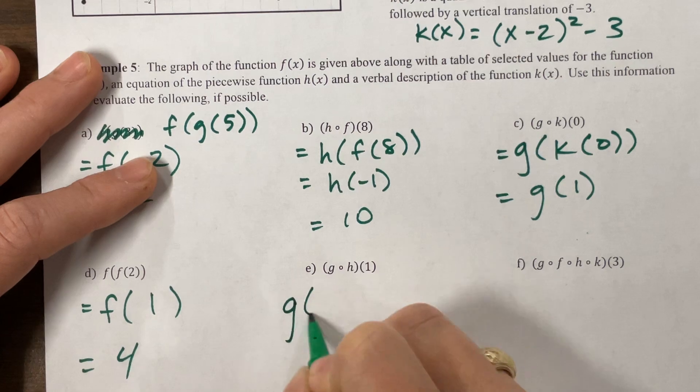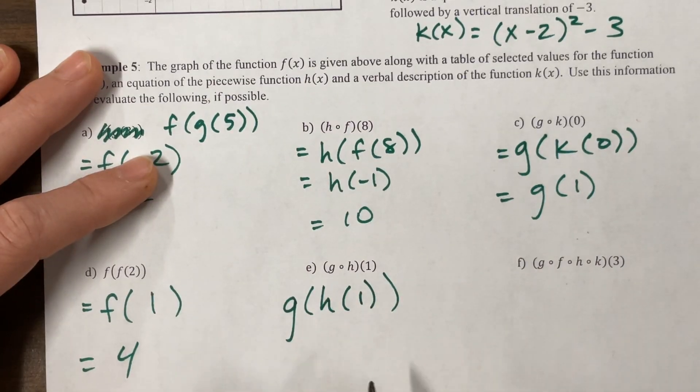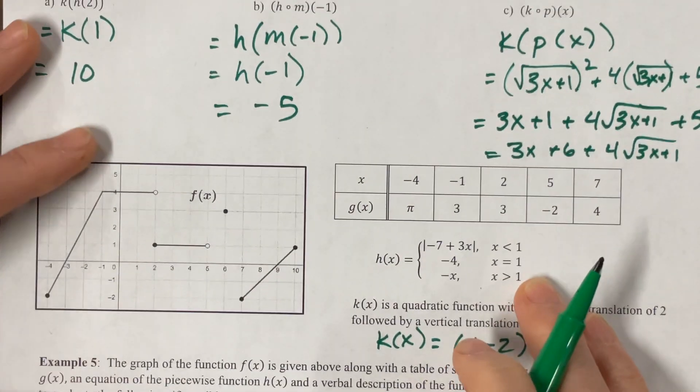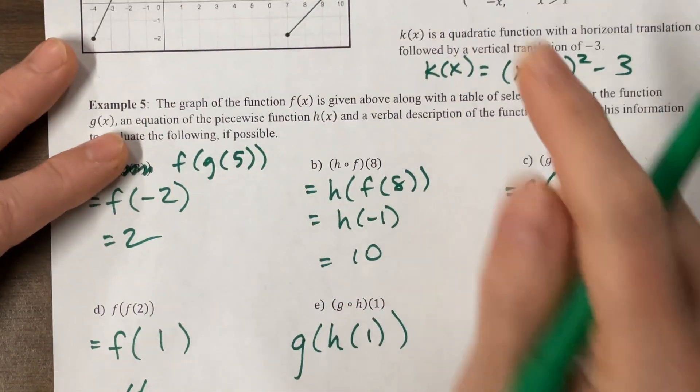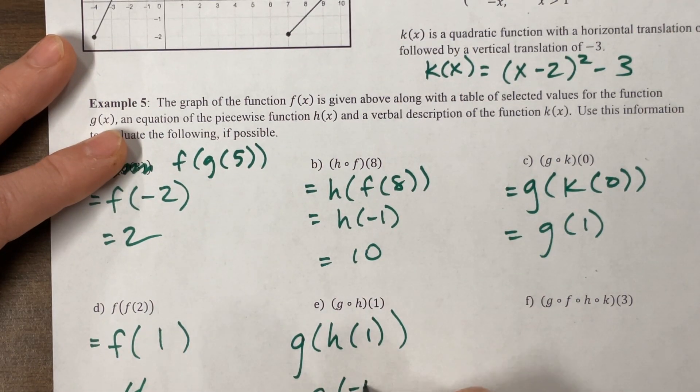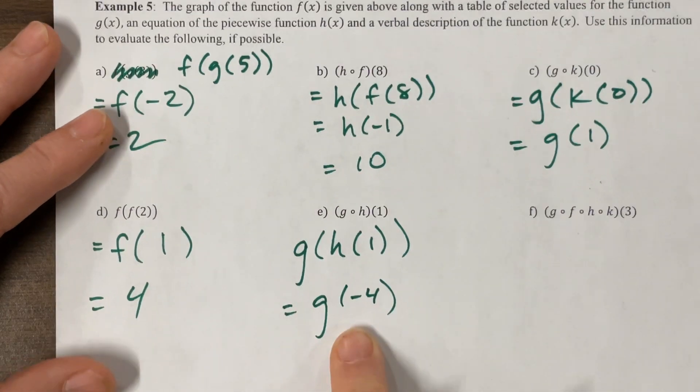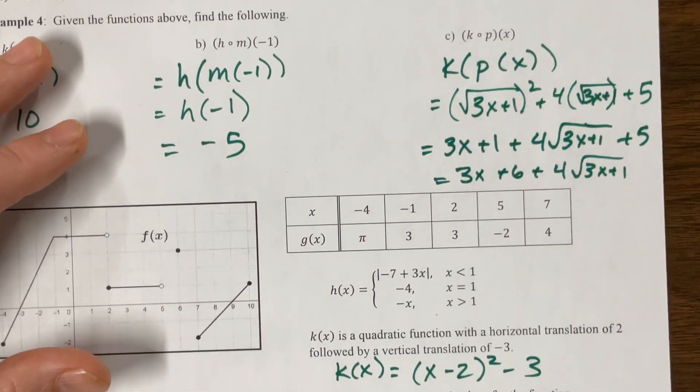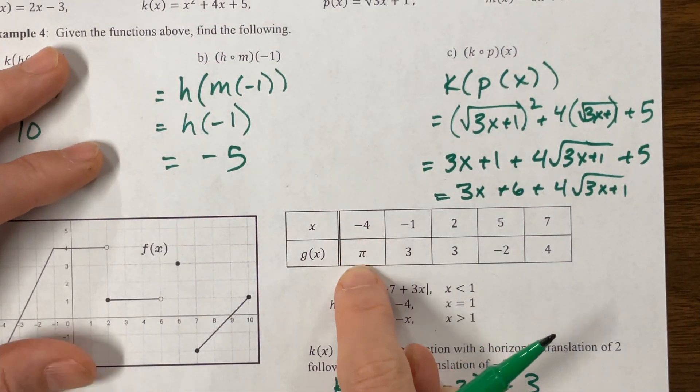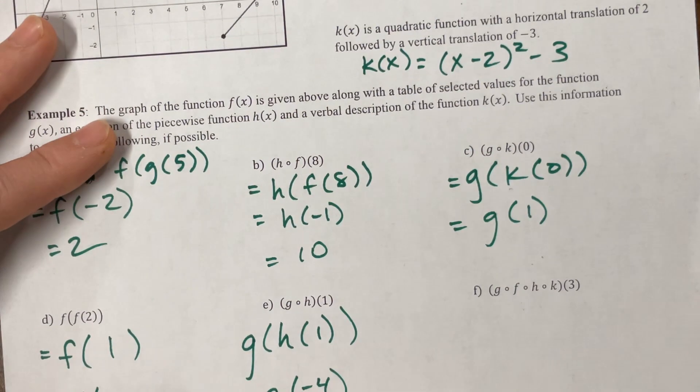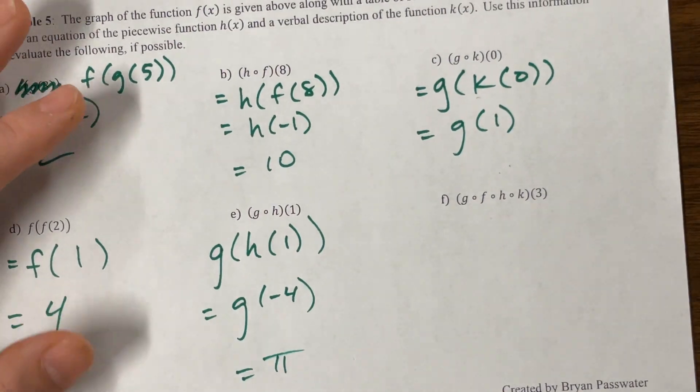Now I'm doing g of h of 1. And so h of 1 is this equation. When it's equal to 1, we equal negative 4. So this will be equal to g of negative 4. Please be in the table. Please be in the table. Please be in the table. Ta-da! It is. G of negative 4 is equal to pi. Lovely.